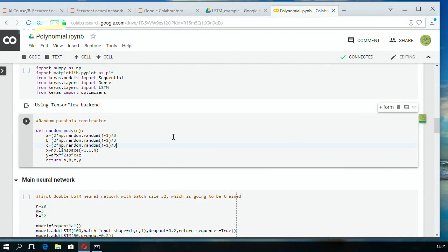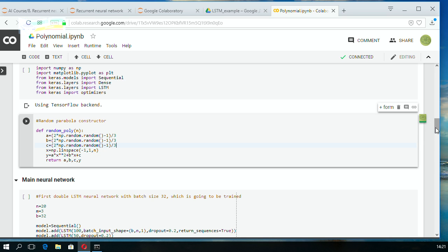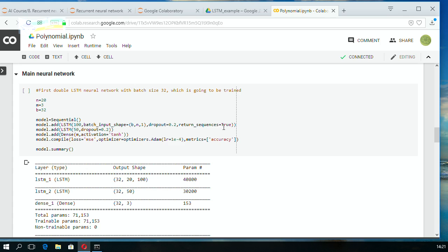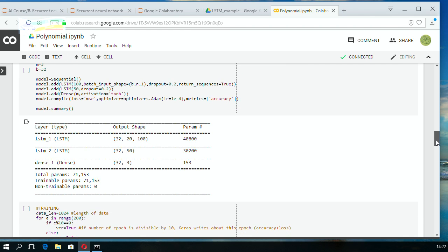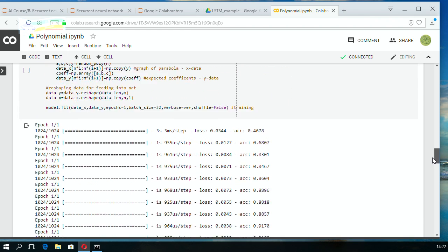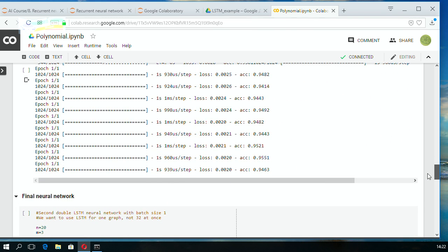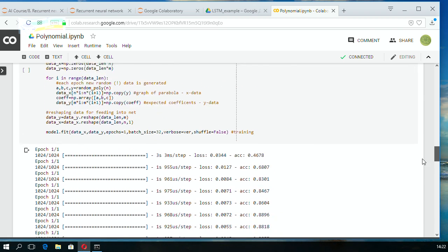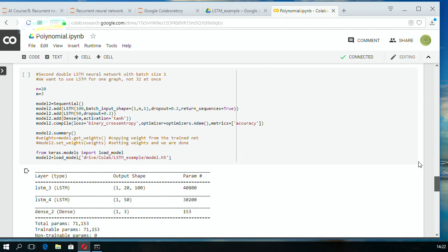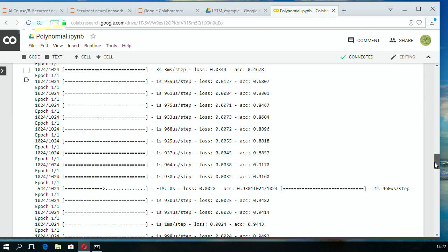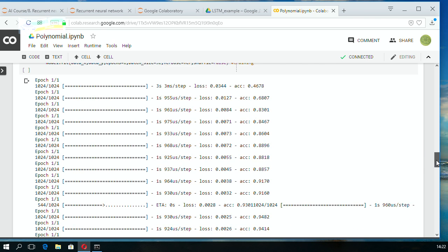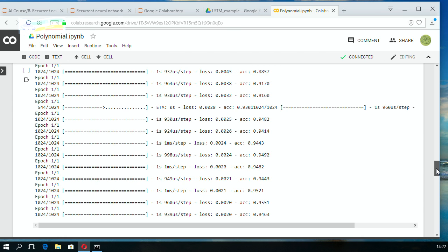I've created a function for creating these random polynomials. Then I initialized this LSTM network. We do some training using Keras. You can see that accuracy of the network is growing, only growing, and loss is decreasing. So our neural network gets closer and closer to predicting these coefficients of parabola.